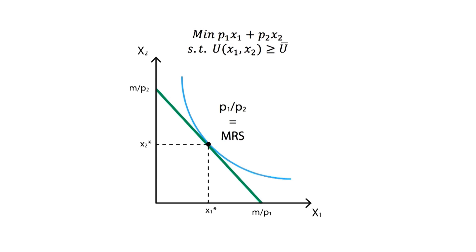At this point, the price of the first good divided by the price of the second one, which is the slope of the budget constraint, will be equal to the marginal rate of substitution, which is equal to the slope of the indifference curve.